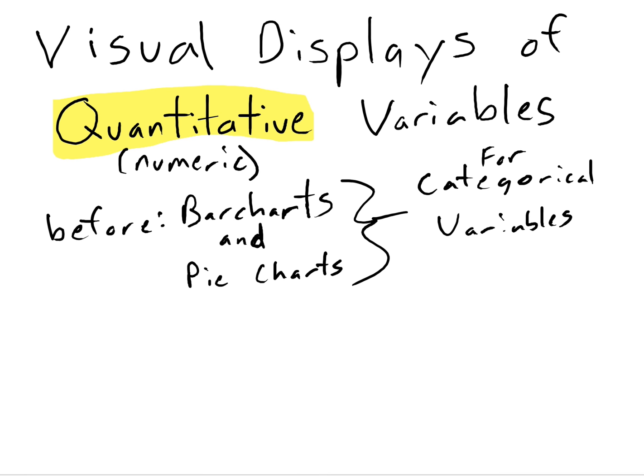Now we're going to look at ways to display quantitative variables. These are going to be a little bit different because quantitative variables like height, age, weight, or number of rooms are measured as numbers. These are all quantitative variables.